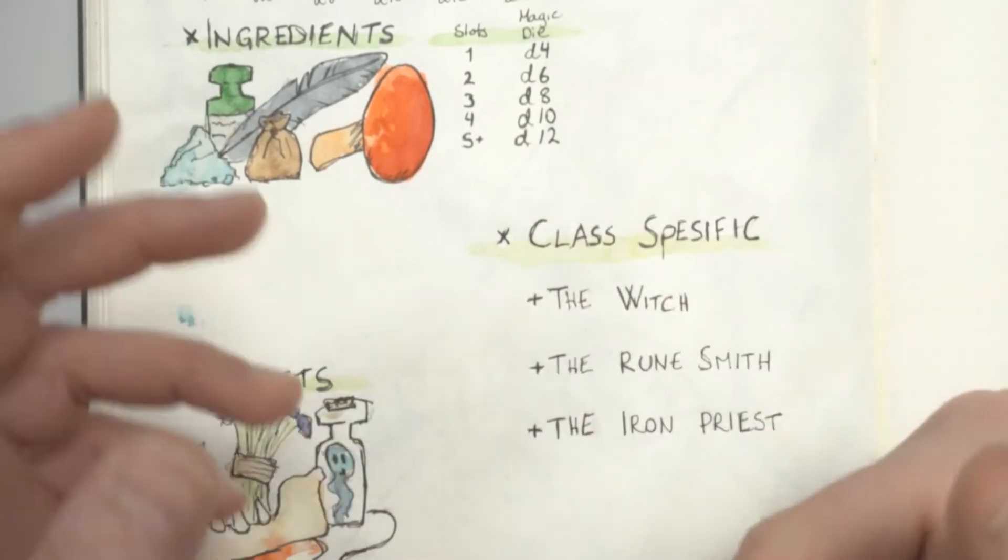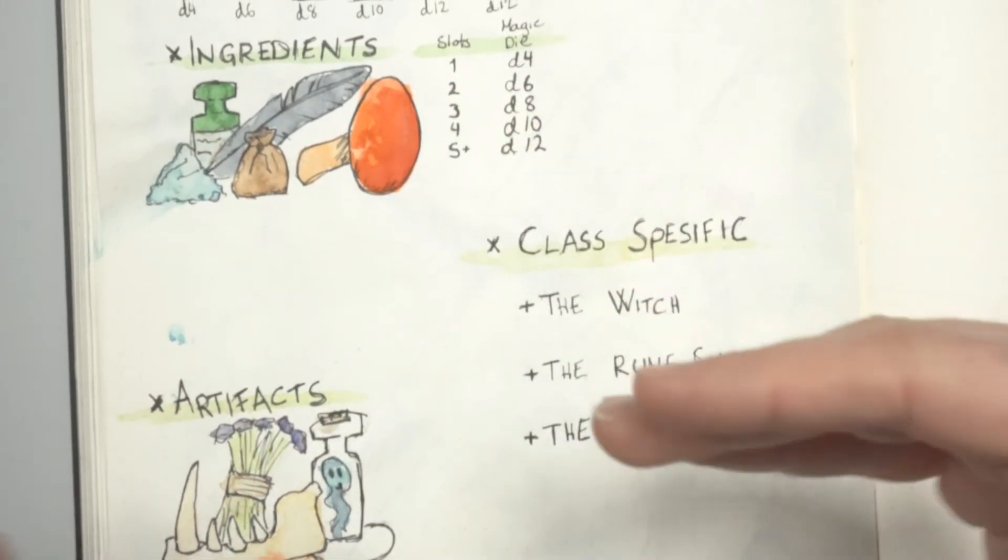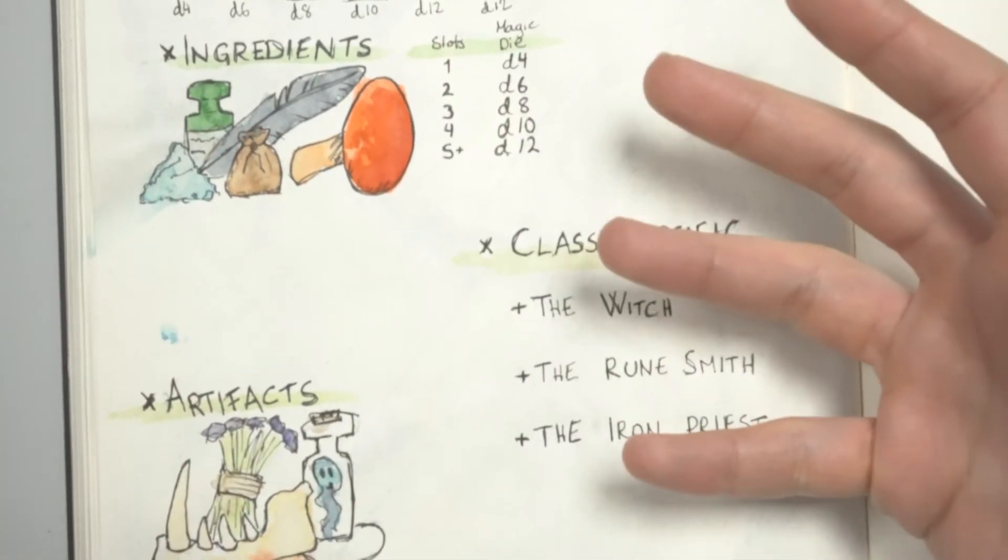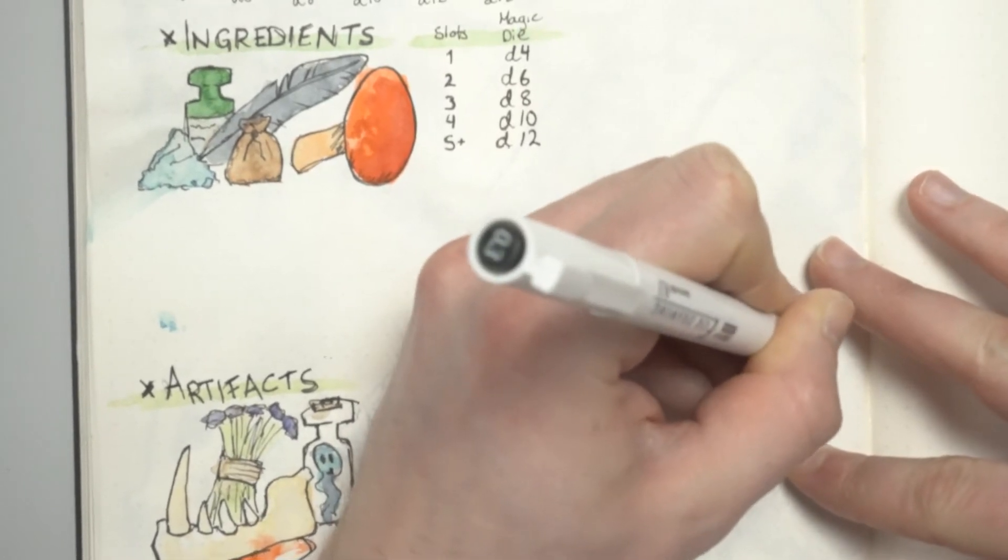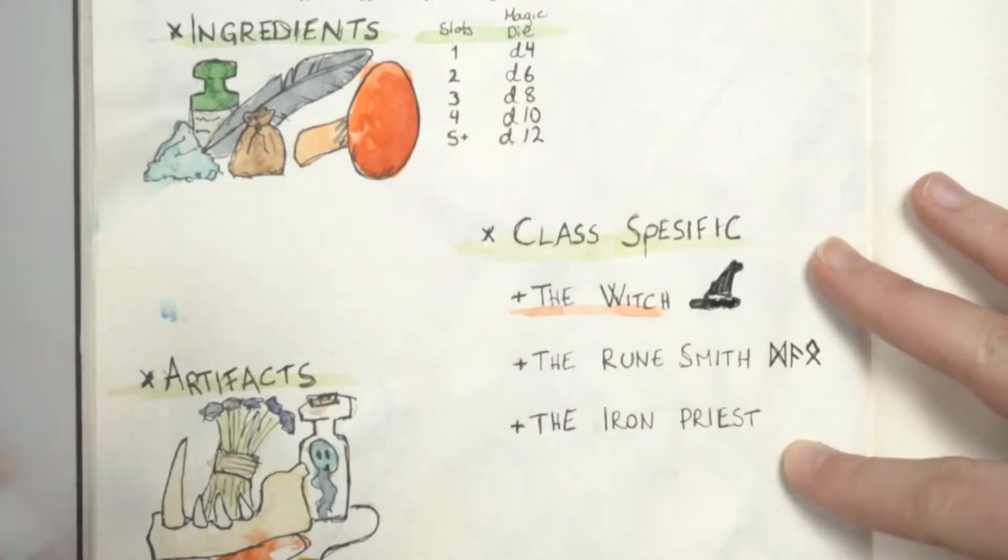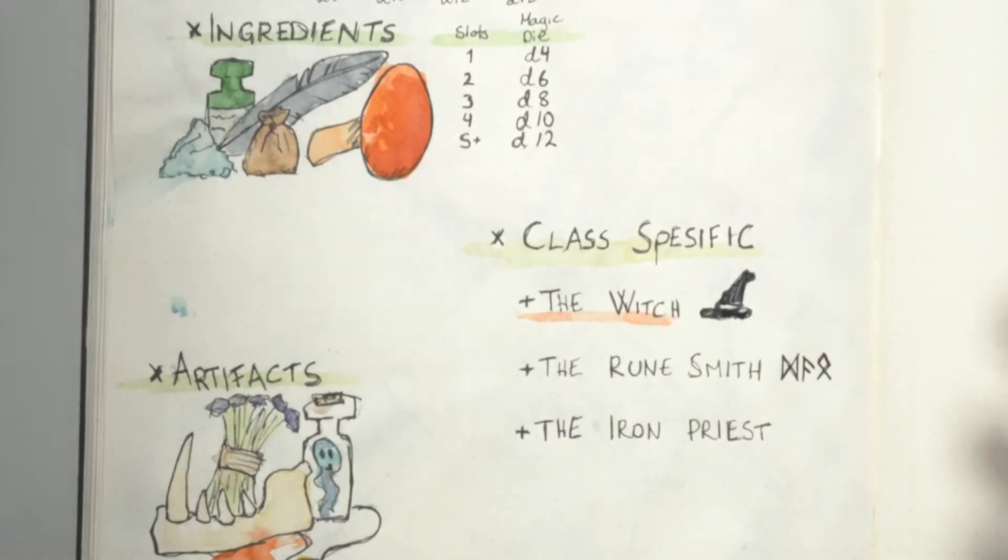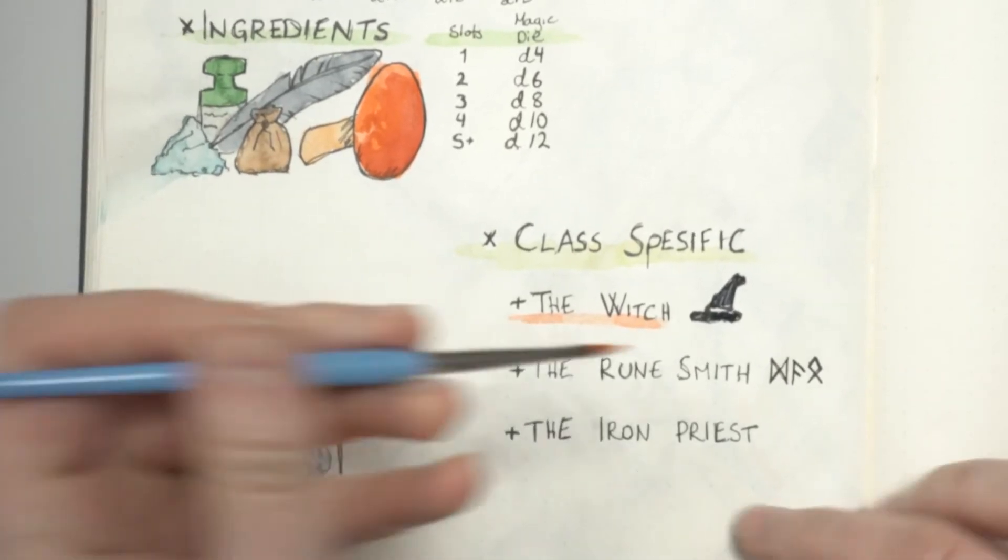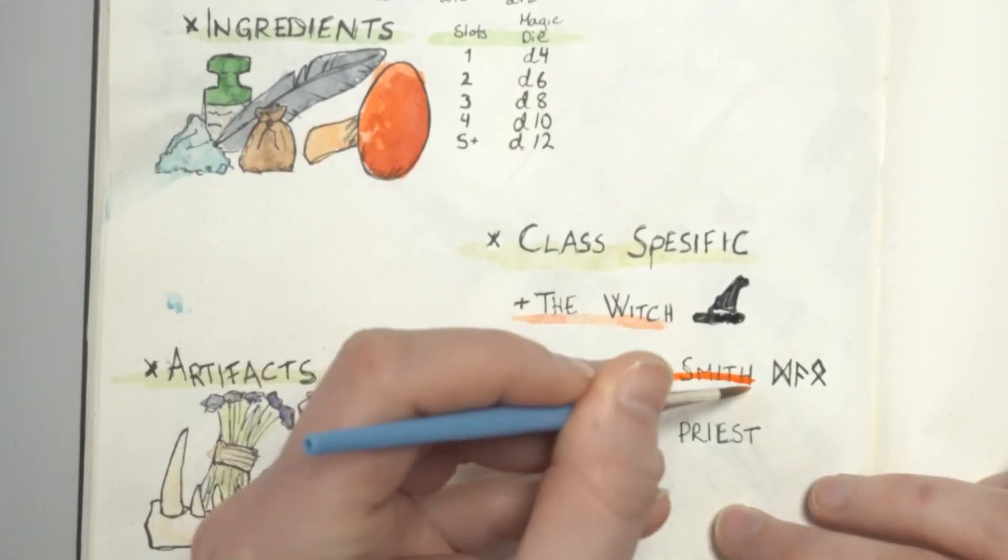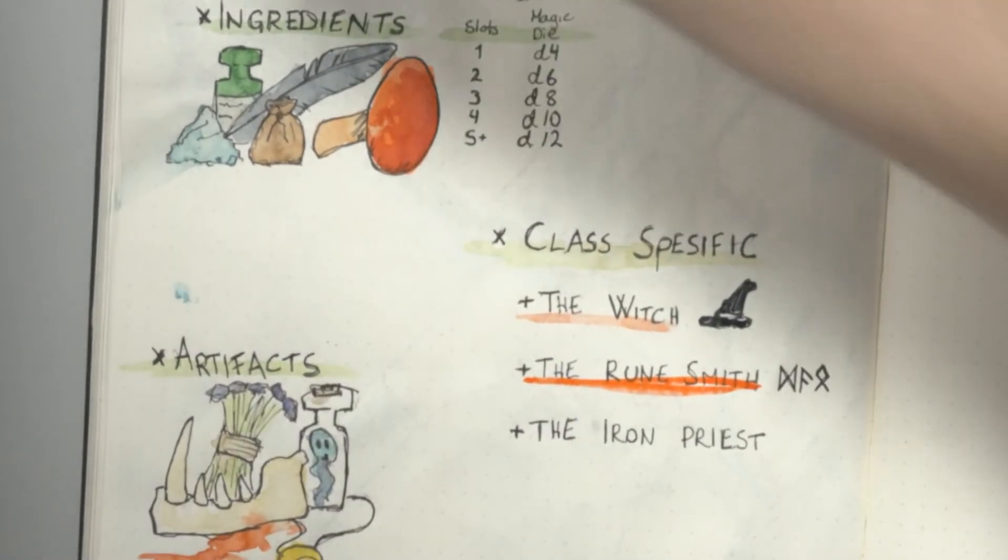The runesmith will also work with aspects, but carve them onto items using runes. Runes can't be combined like the witch can with the focused ingredients, but runes are more powerful spells focused on one aspect.